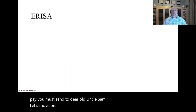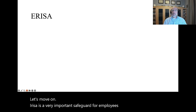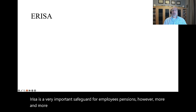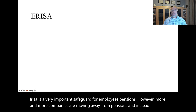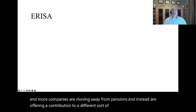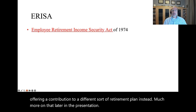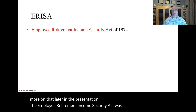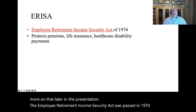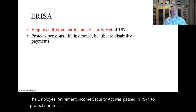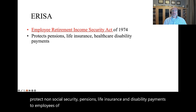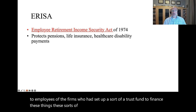ERISA is a very important safeguard for employees' pensions. However, more and more companies are moving away from pensions and instead are offering a contribution to a different sort of retirement plan. The Employee Retirement Income Security Act was passed in 1974 to protect non-social security pensions, life insurance, and disability payments to employees of firms who had set up a sort of trust fund to finance these things. These sorts of benefits help employers recruit good employees.